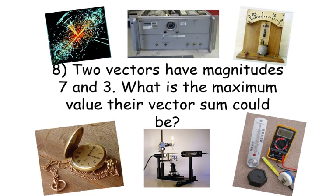Number eight. Two vectors have magnitudes seven and three. What is the maximum value their vector sum could be?